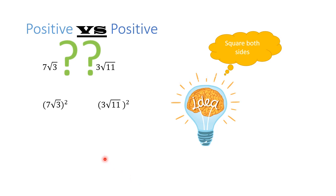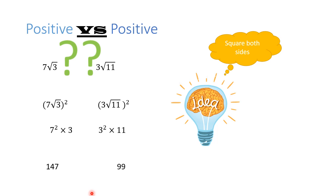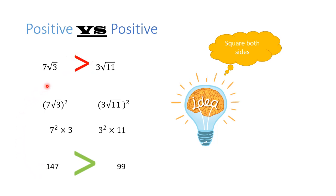If we square both sides, we distribute the power of 2: 7 squared times 3 (the radical disappears) on one side, and 3 squared times 11 (the radical disappears) on the other. Calculating: 49×3 = 147 and 9×11 = 99. Since 147 is greater than 99, and this side corresponds to 7√3, we conclude that 7√3 is greater than 3√11.